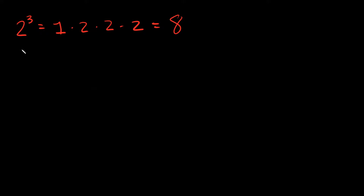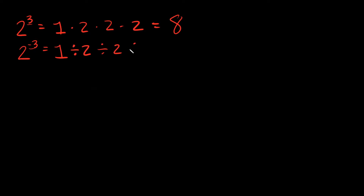What if I had 2 to the negative 3? When we have a positive exponent, that means multiply. When we have a negative exponent, that means divide. So I'm going to do the same thing — instead of multiplying by 2, I'm going to divide by 2, three times.